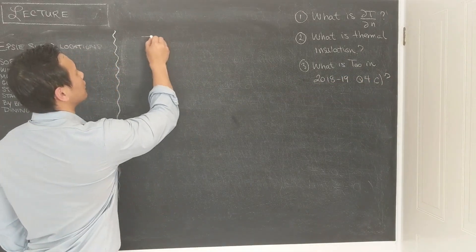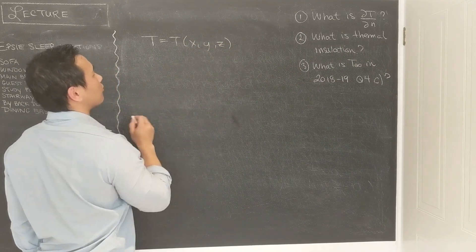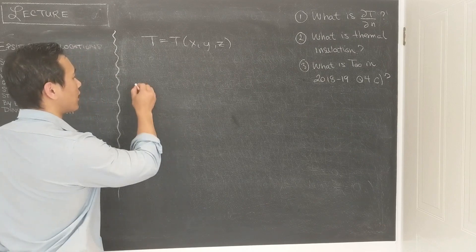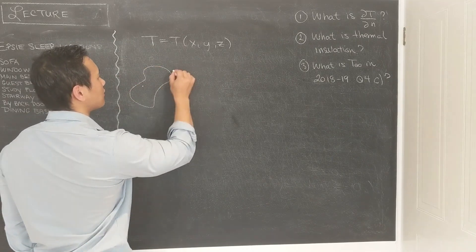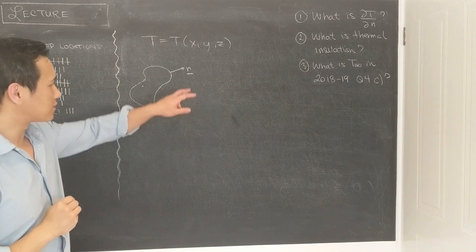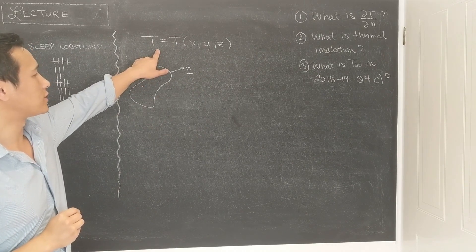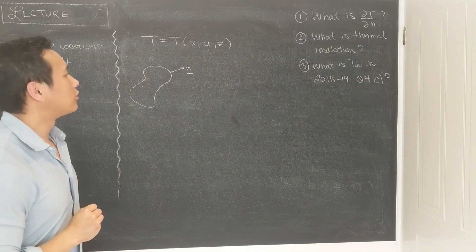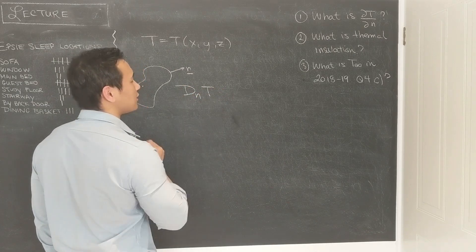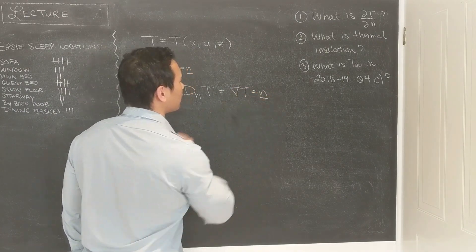So in question 1, t here is a scalar field, so t of x, y, and z, and I'd like to determine what is the rate of change of t in the normal direction. So n is, you imagine some space, n is some direction, the normal direction to some surface, and you want to calculate what is the rate of change of t in that direction. You know from the initial chapters that the directional derivative dn t is equal to grad t dot n, like that.